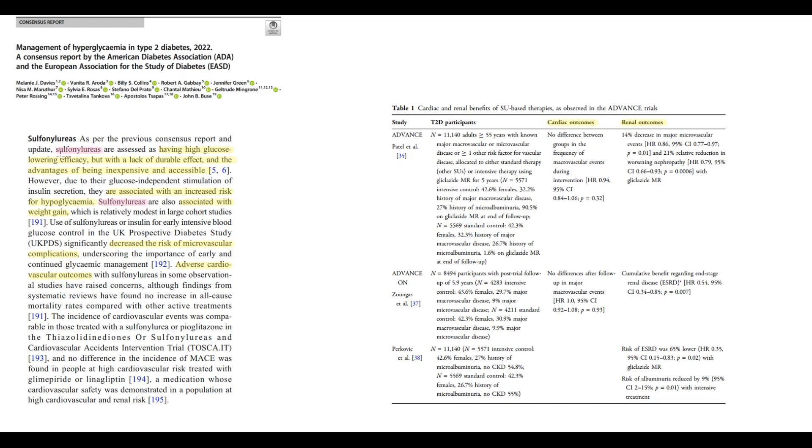As we already know, sulfonylureas are relatively effective, cheap drugs. They have two major side effects: hypoglycemia and weight gain. And what is also important is that, according to previous studies, sulfonylureas can significantly decrease the risk of microvascular complications. It's especially important for renal tissue, because as we know, high blood glucose level can cause diabetic nephropathy.